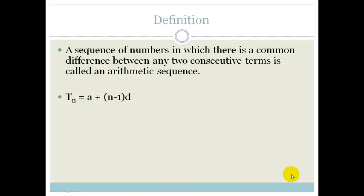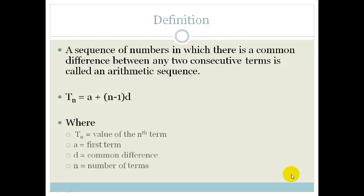The formula for the general term is Tn = a + (n-1)d, where your Tn is your value of your nth term, a is the first term, n is the number of terms, and d is the common difference.